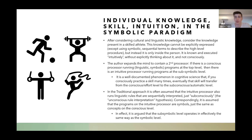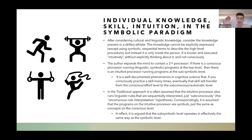Now consider a different kind of knowledge — the knowledge in a skilled athlete. This knowledge cannot be explicitly expressed. An athlete can't transfer their understanding of sports fully using language; they can only explain the very high-level procedure in symbolic sequential terms. The low-level procedure is contained inside the person, known and executed intuitively without ever explicitly thinking about it. The author expands the mind to contain not only the top-level conscious processor but also a second processor called the intuitive processor, running programs at the sub-symbolic level.